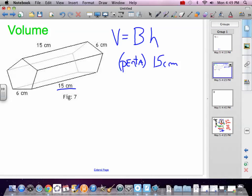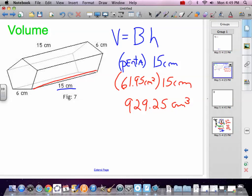So let's take that number back. Our pentagon, 61.95 centimeters squared, multiply that by 15 centimeters because that's how far apart the bases are. Times 15 equals 929.25 centimeters cubed, because I got a centimeter squared times a centimeter, that gets us cubed.